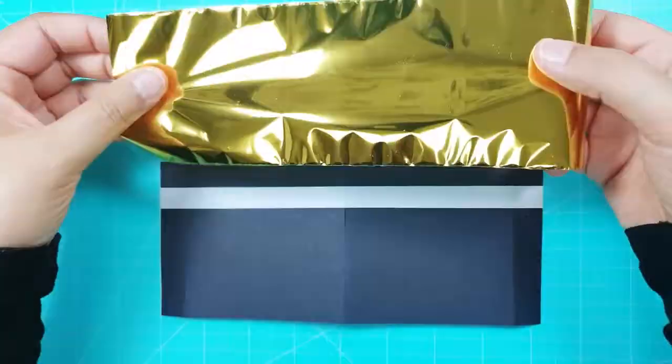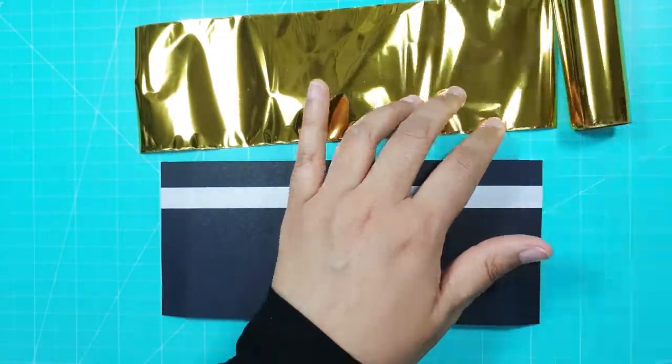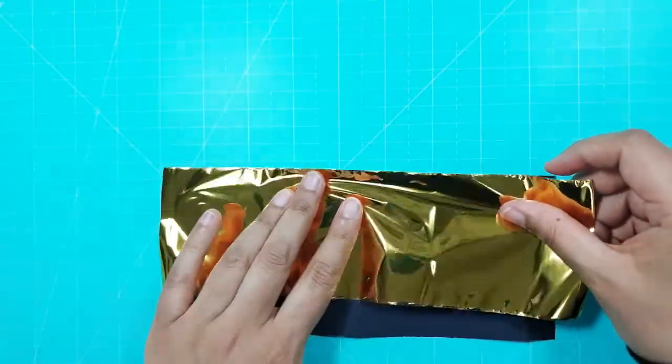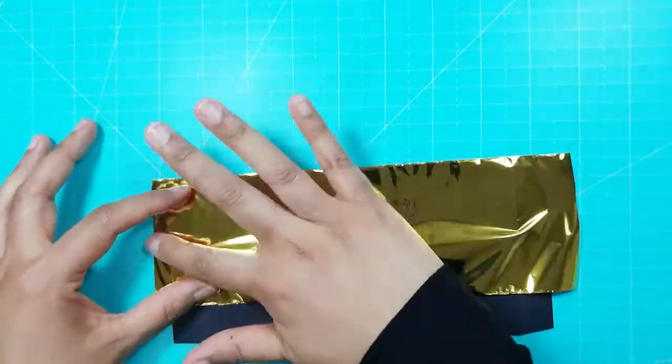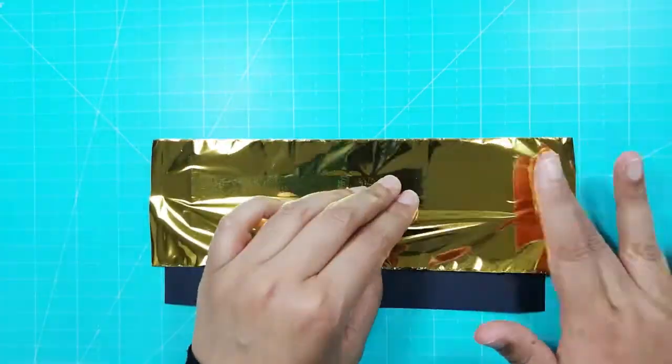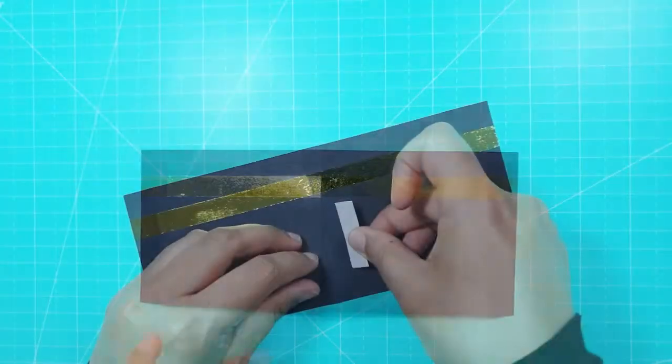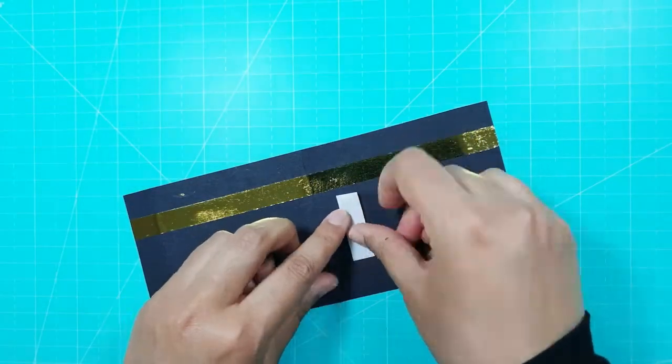I took some gold craft foil, cut it to the same width as the piece of card and removed the backing tape from the card. I placed the foil over the double-sided tape, pressed it down so that it stuck to the tape and then lifted the foil up. This gave a lovely golden effect and I did this for both pieces of black card.